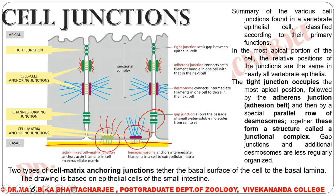There is also the actin-linked cell-matrix junction that anchors actin filaments in a cell to the extracellular matrix. These are the two cell-matrix anchoring junctions that attach the basal surface of the cell to the basal lamina. This picture is from Bruce Alberts and the drawing is based on an epithelial cell of the small intestine.